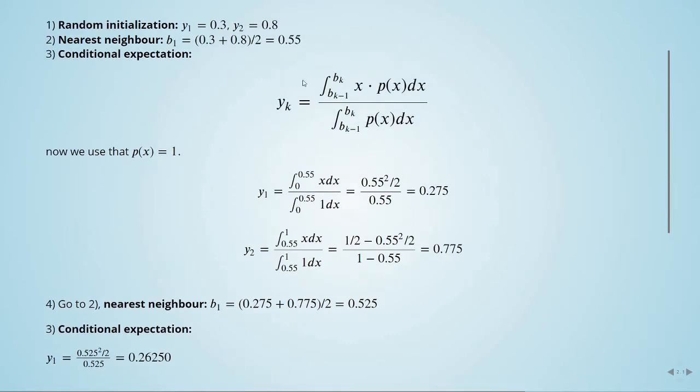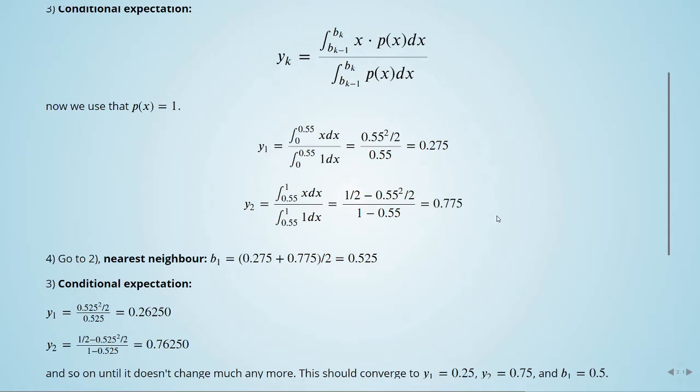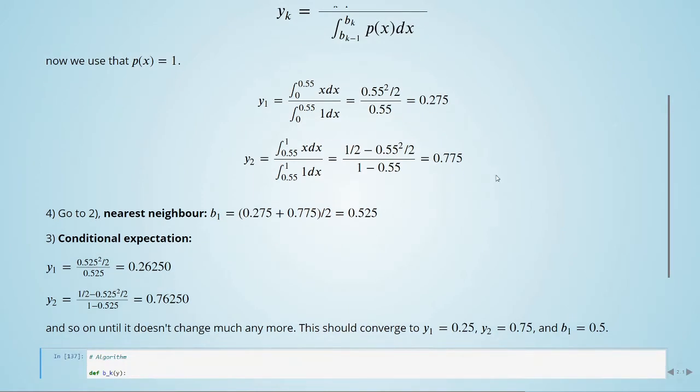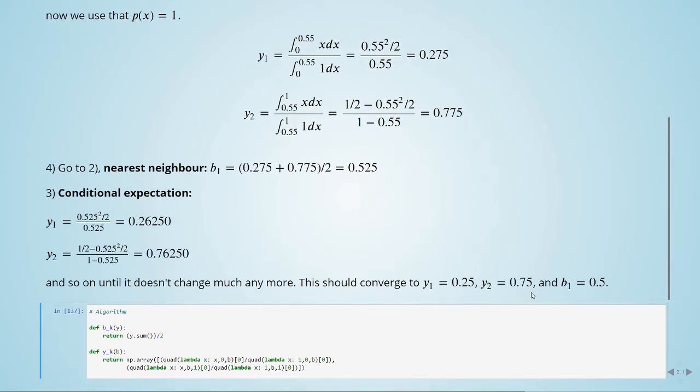And then we go back to step 3 and calculate the conditional expectation again. We will keep doing this until it doesn't change much more. We will see that this should converge to y1 equal to 0.25 and y2 equal to 0.75 and b1 to 0.5.